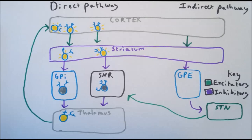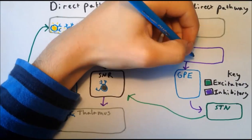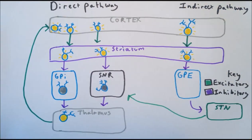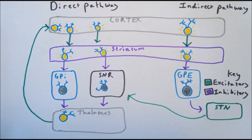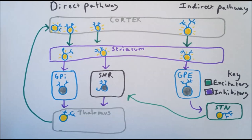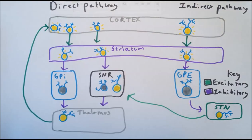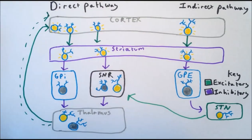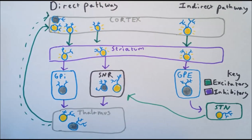These again inhibit the thalamus, which sends excitatory inputs to the cortex. When the indirect pathway is stimulated, the cortex excites the striatum. The striatum then inhibits the external globus pallidus. Now that the neurons in the external globus pallidus are inhibited, they are less able to inhibit the neurons of the subthalamic nucleus. This enables the subthalamic nucleus to excite the substantia nigra pars reticularis and allow it to inhibit the thalamus, thus preventing it from exciting the cortex.